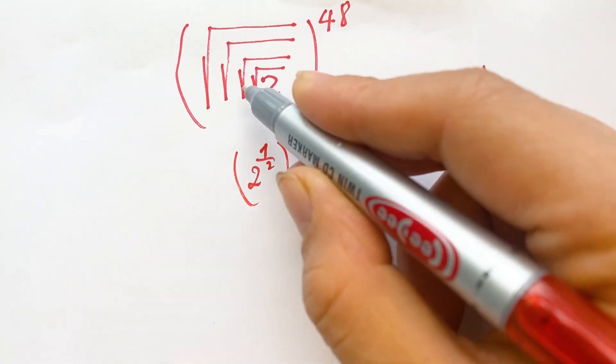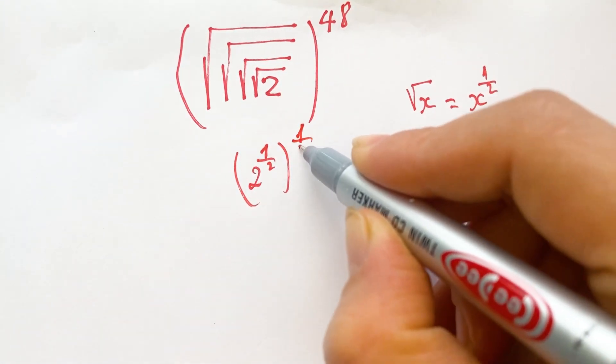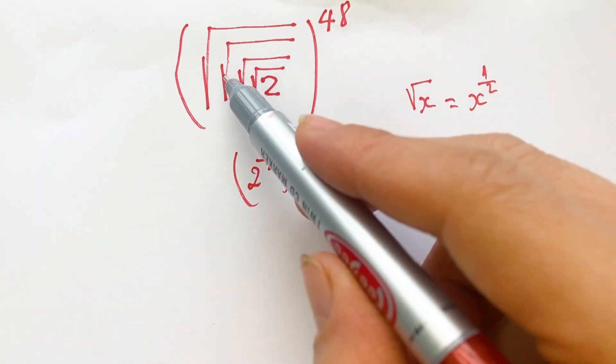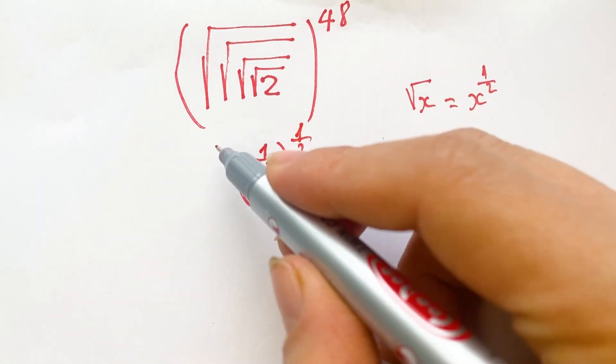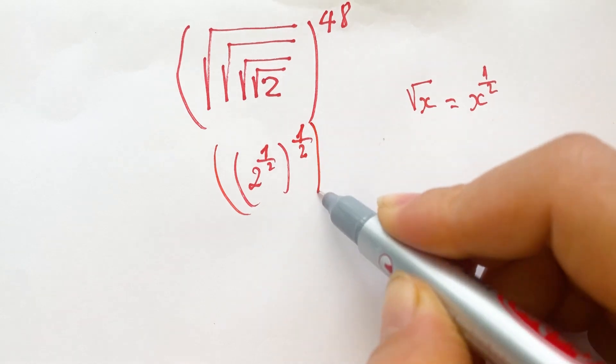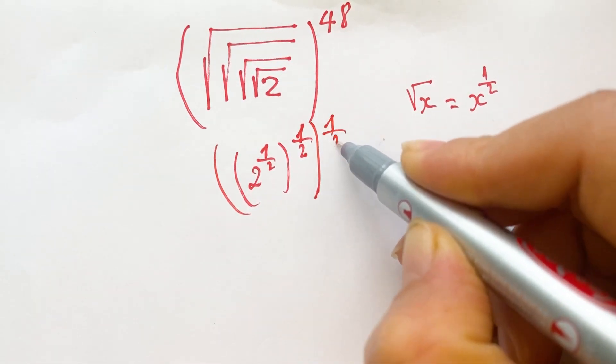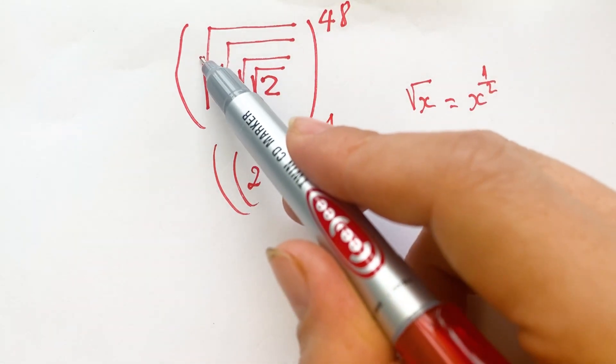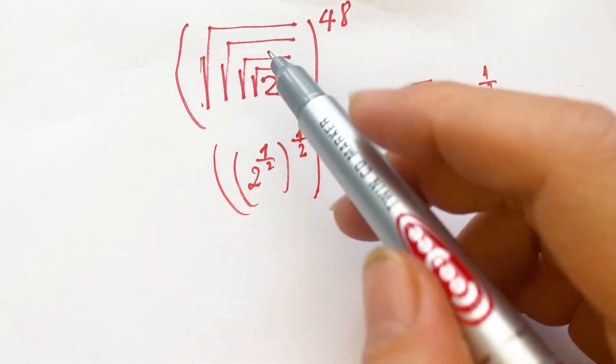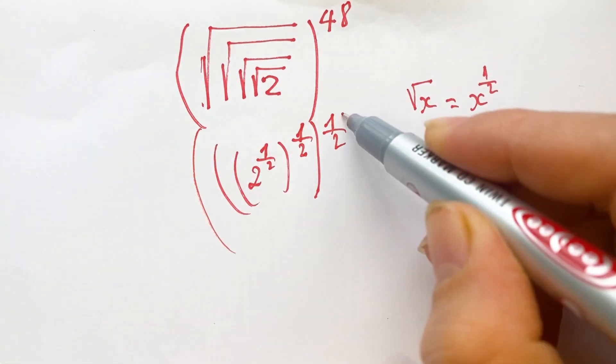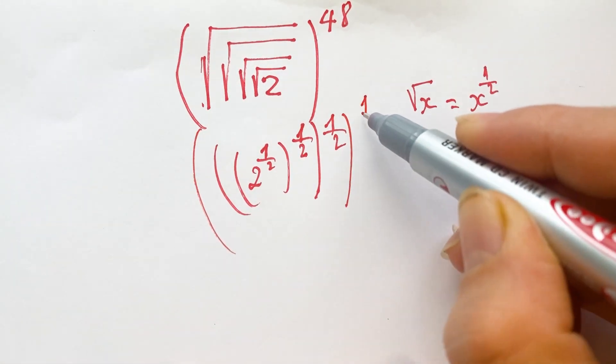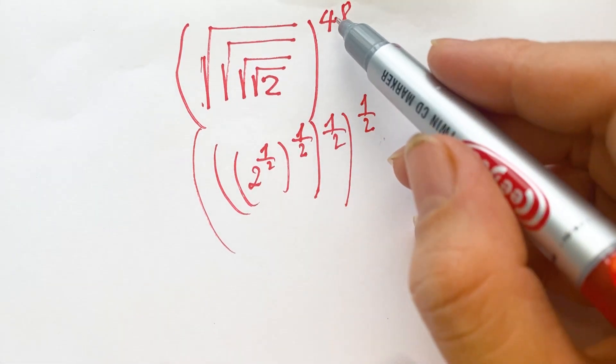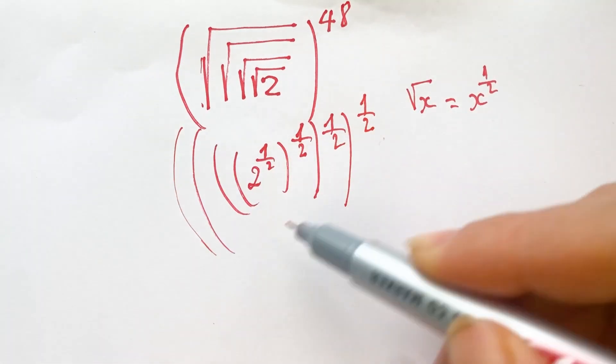In practice, each square root becomes a power of one-half, continuing through the nested square roots to the final power of 48.